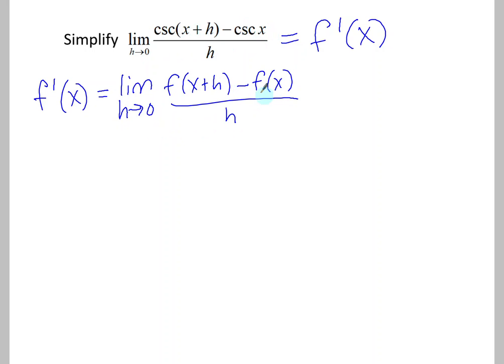Identify what the function is and find its derivative. Notice the way it's set up where we're subtracting f of x. This is the function f of x equals cosecant x.